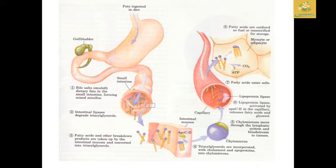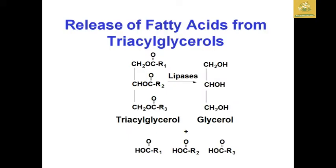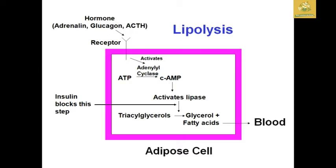I will first tell you about the release of fatty acids from triacylglycerides. When triacylglycerides enter the digestive system, the first active enzyme to act on them is lipase. When acted upon, triacylglycerides are converted into glycerol with the release of fatty acids (R-COOH groups). The hormone adrenaline and glucagon act as receptors, activate ATP synthetics, and active lipases act on triacylglycerides. Insulin blocks the activation of lipase in the adipose tissue.